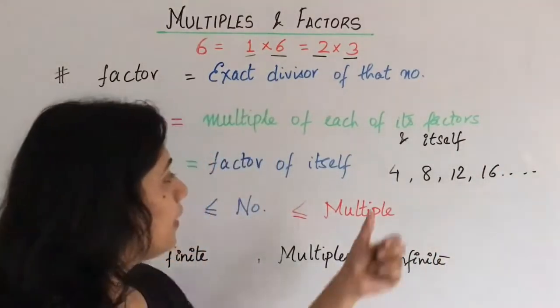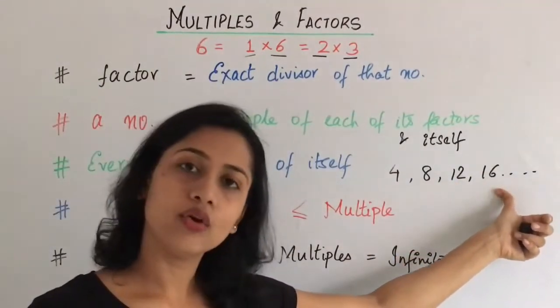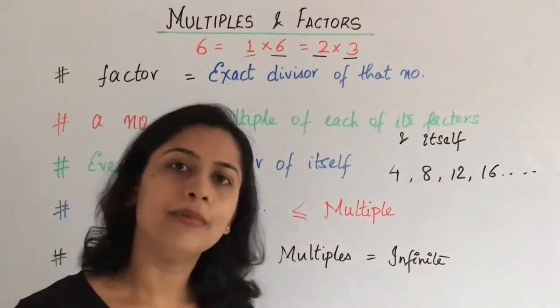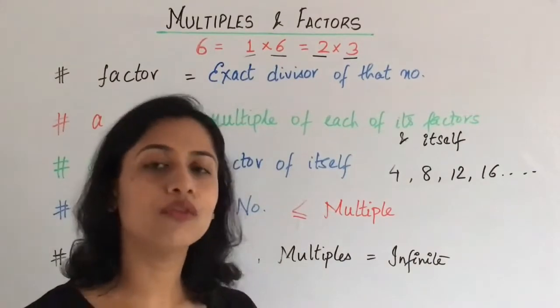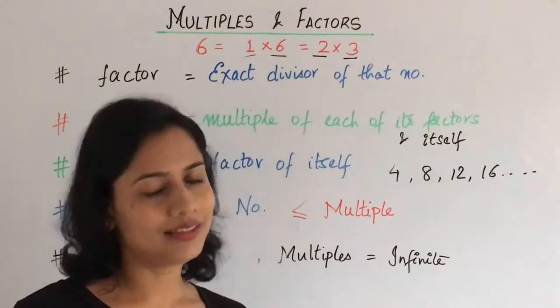This is infinite value. So, ye sare jo multiples hai of the number 4, ye kya hongay - 4 se badi hongay ya uske barabar hongay. Chhote nahi ho sakti. Multiples, humesha unki value zyada hi hoti hai, kya kyunki us number se kisi bhi number ko multiply karne pe outcome aa raha hai, therefore obviously us number se badi hi hongay.